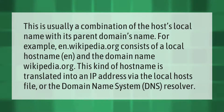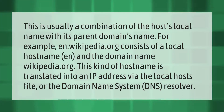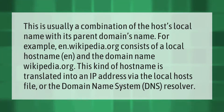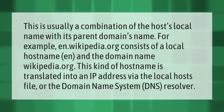A fully qualified host name is usually a combination of the host's local name with its parent domain's name. For example, en.wikipedia.org consists of a local hostname 'en' and the domain name wikipedia.org. This kind of hostname is translated into an IP address via the local hosts file or the Domain Name System (DNS) resolver.